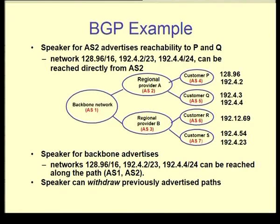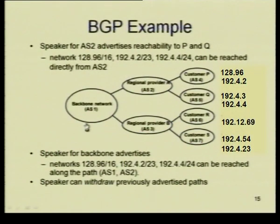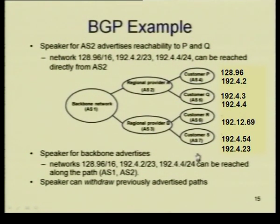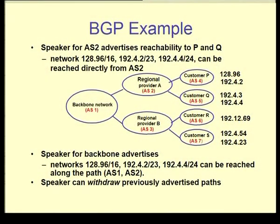Here is a quick example of the BGP protocol. Consider a small network: a backbone AS1 connected to two networks AS2 and AS3, which in turn connect to customers AS4, AS5, AS6, and AS7 — customers P, Q, R, and S. We need to look at how advertisements are sent by each autonomous system and how that information is passed on so all autonomous systems can choose a path from any source to any destination.